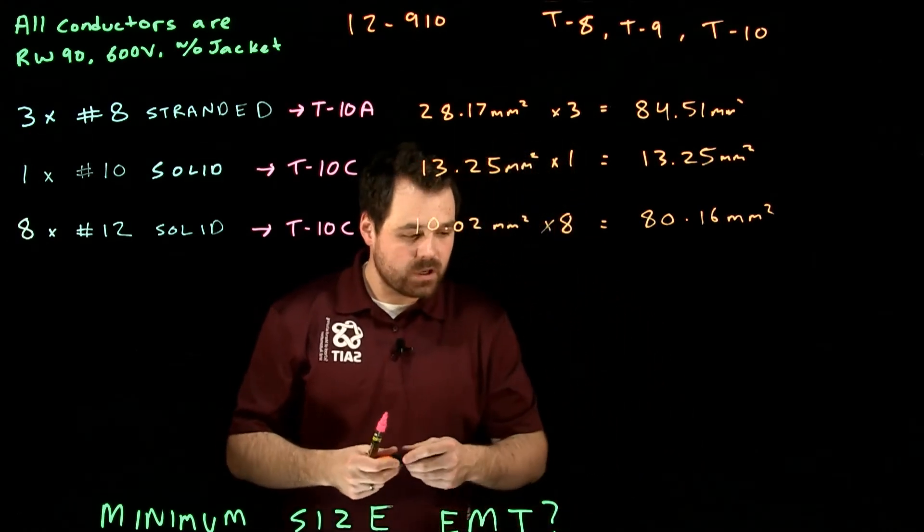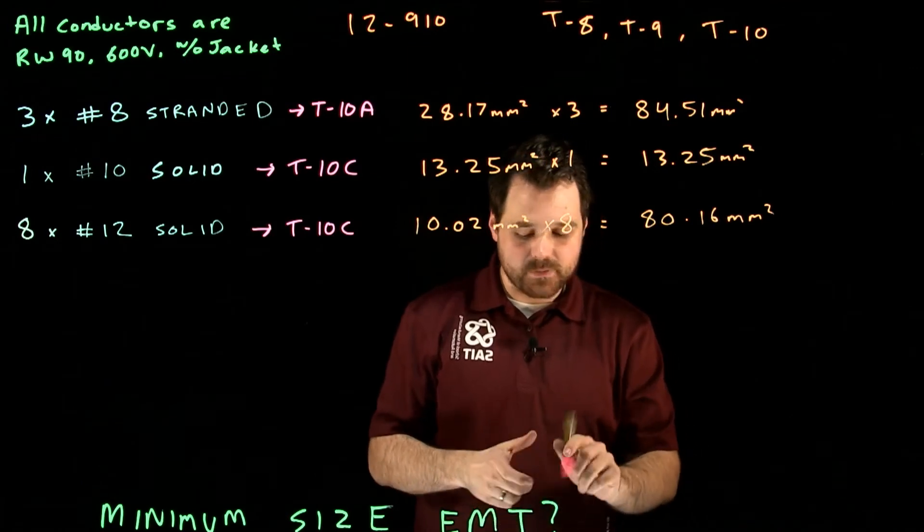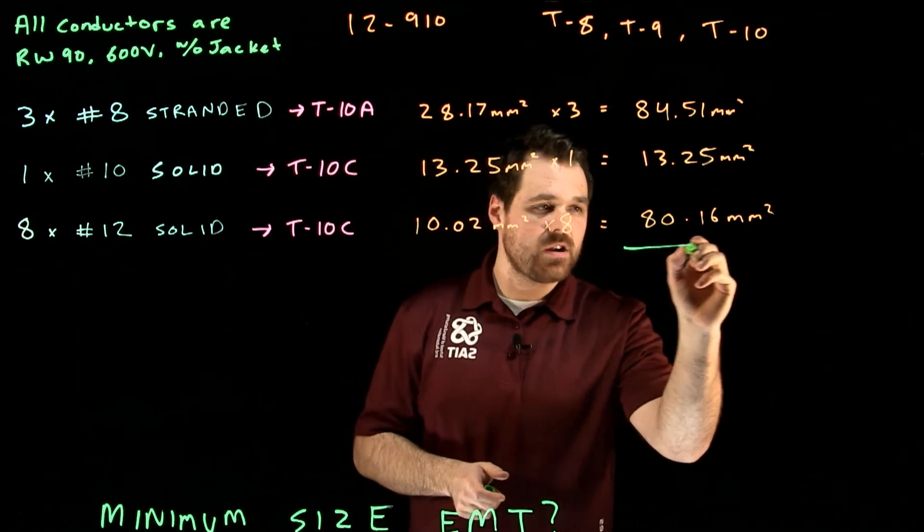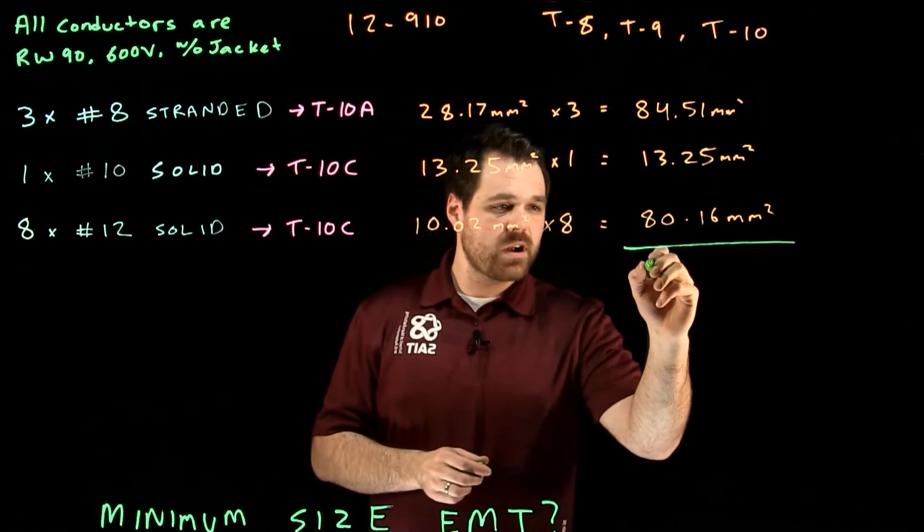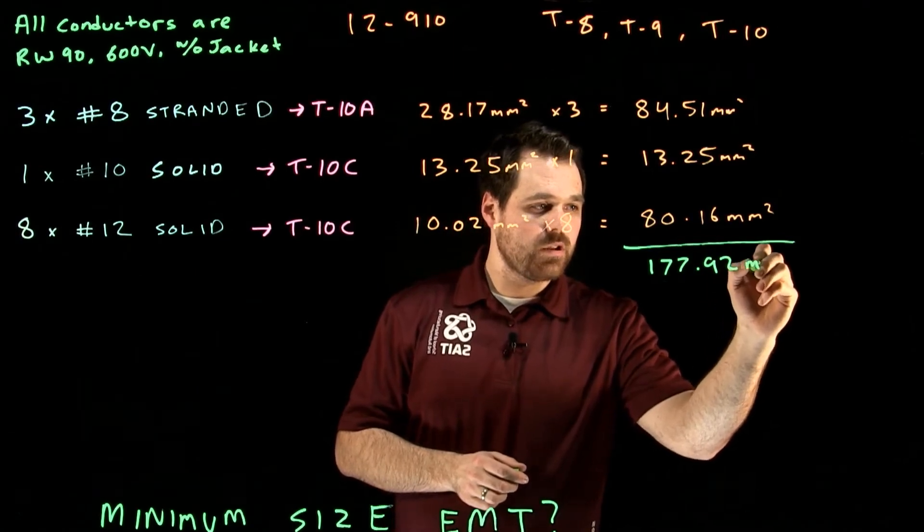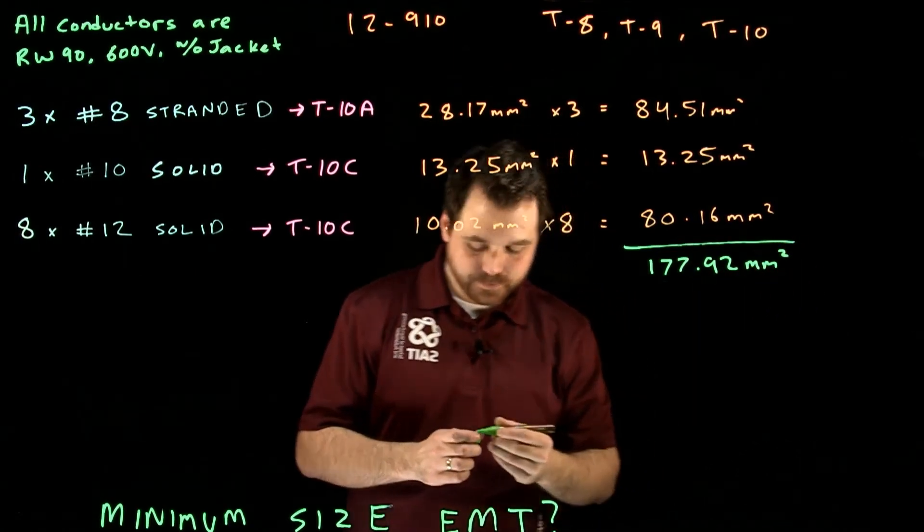Then what we want to do is we want to add all of this up, which is going to give us the total space that these conductors are going to take up in a conduit. So I add all of these numbers up. It gives me 177.92 millimeters squared. Perfect.